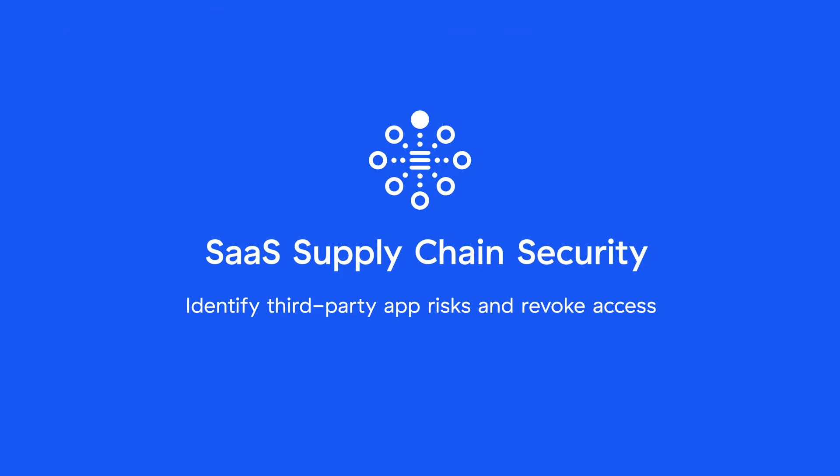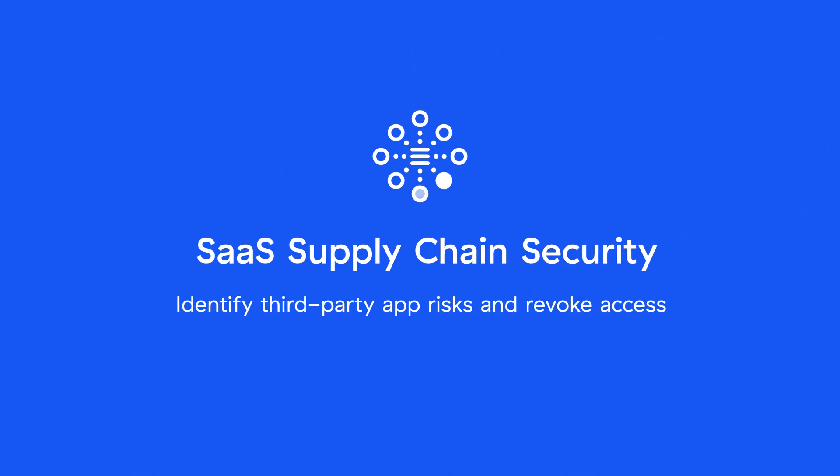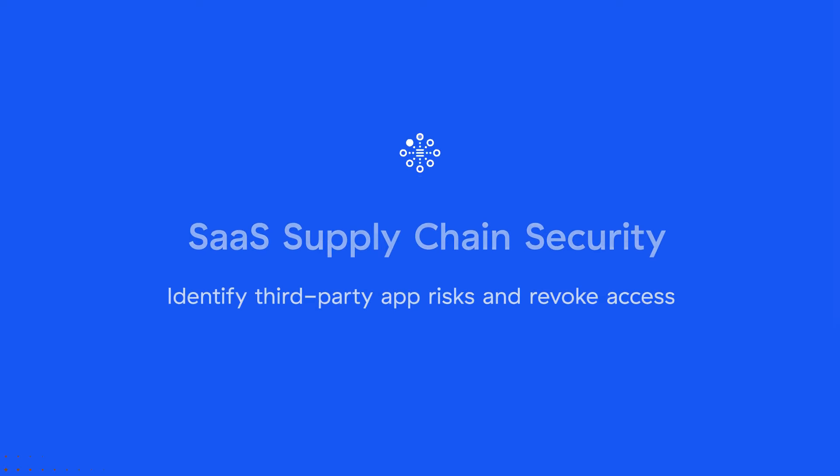Our third-party app security and governance module highlights application risks with the lens of SaaS supply chain security problems. Within minutes, we can identify all third-party apps that are connected to your SaaS platforms and tell you which ones are risky and which ones are not. This visibility allows you to decide if you need to revoke any of these applications to secure your crown jewels.